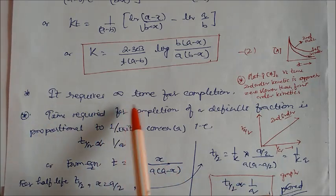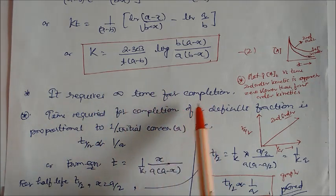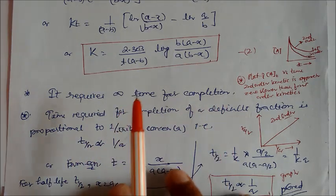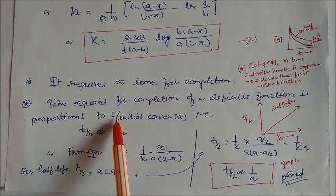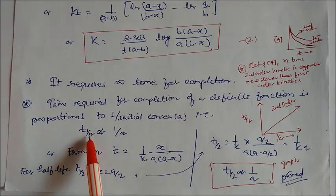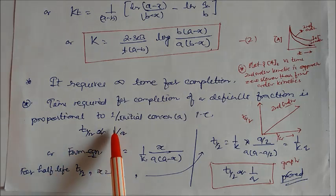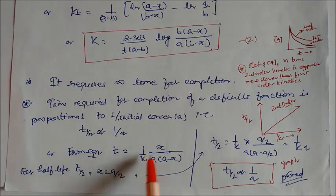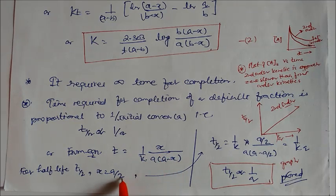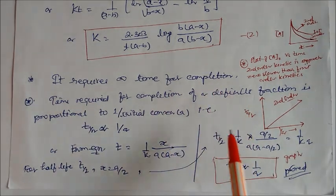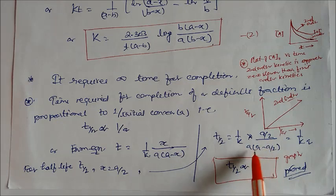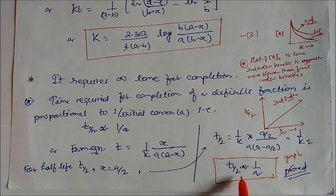Second order reactions require infinite time for complete reaction. The time required for completion of a definite fraction is proportional to 1/(initial concentration). For the half-life, when concentration becomes half, t½ equals 1/(KA₀). So the half-life period is proportional to 1/A, meaning it is inversely proportional to initial concentration.